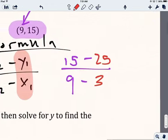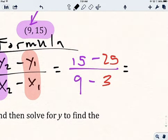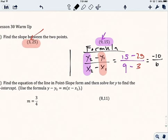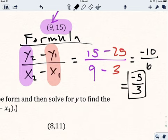From there, it's just a matter of calculating. 15 minus 25 is negative 10. 9 minus 3 is 6. So I'm going to end up with negative 10 over 6. I can simplify. Both of those are divisible by 2. Negative 10 divided by 2 is negative 5, and 6 divided by 2 is 3. So the simplified version is negative 5 thirds.